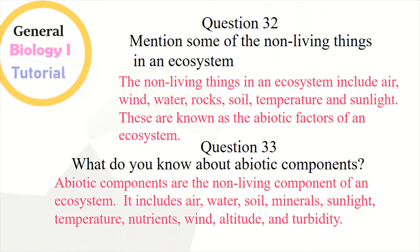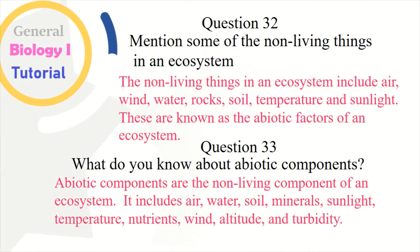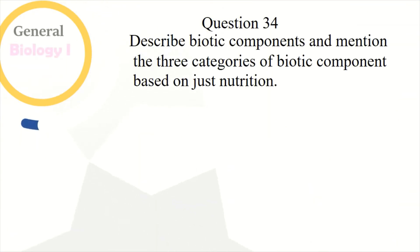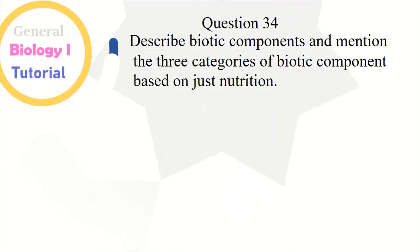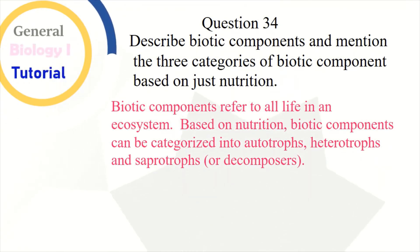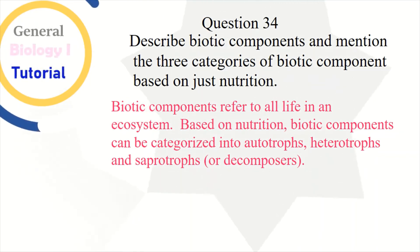Abiotic components are the non-living components of an ecosystem. They include air, water, soil, minerals, sunlight, temperature, nutrients, wind, altitude, turbidity, etc. Question 34: Describe biotic components and mention the three categories based on nutrition. Biotic components refer to all life in an ecosystem. Based on nutrition, biotic components can be categorized into autotrophs, heterotrophs, and saprotrophs or decomposers.